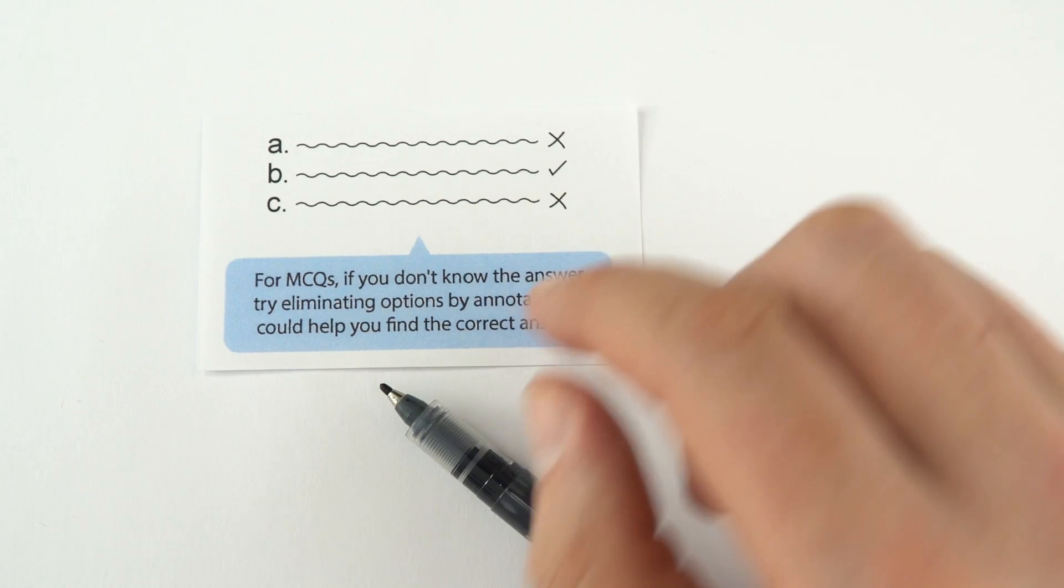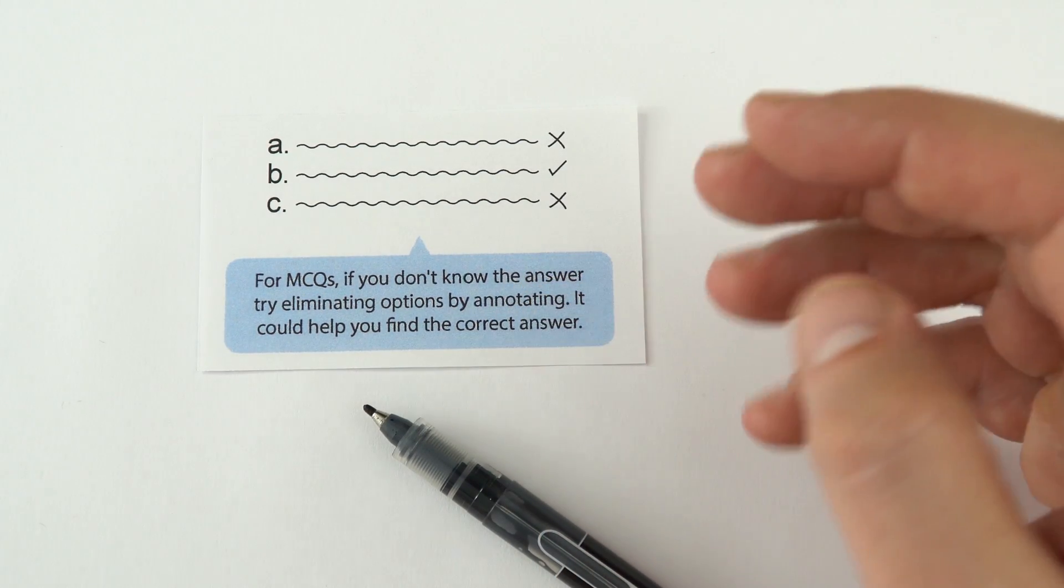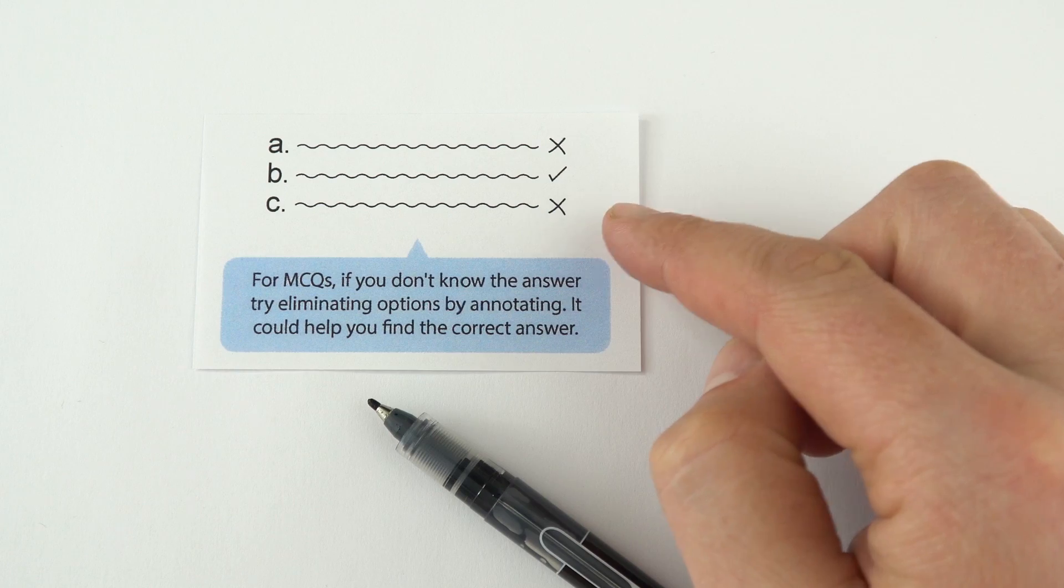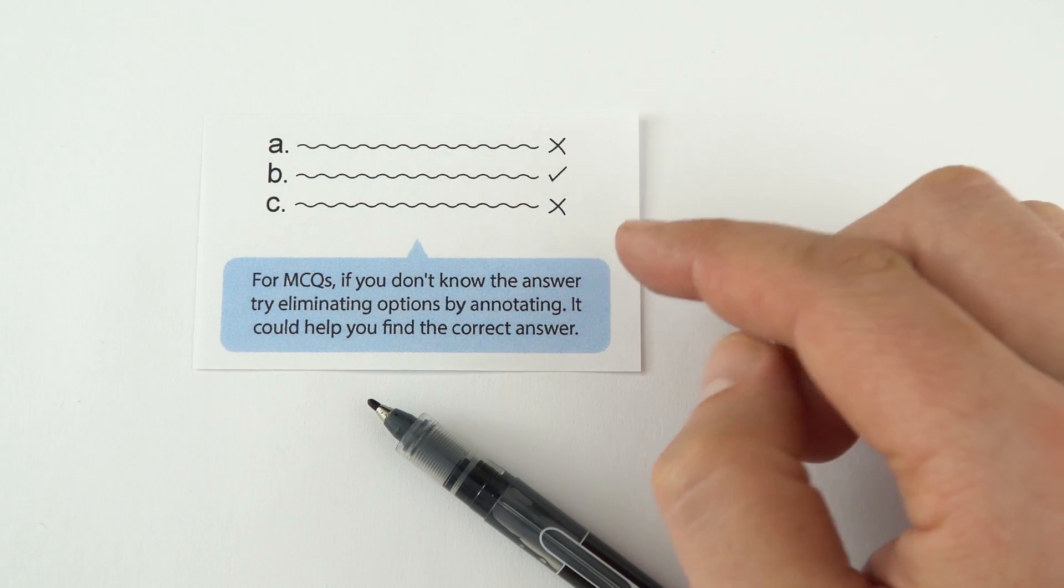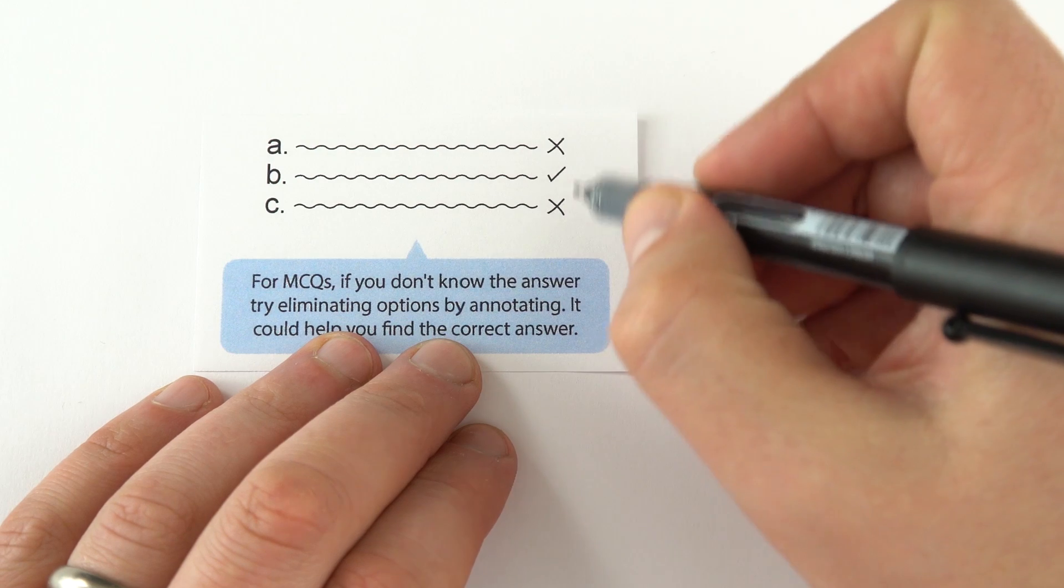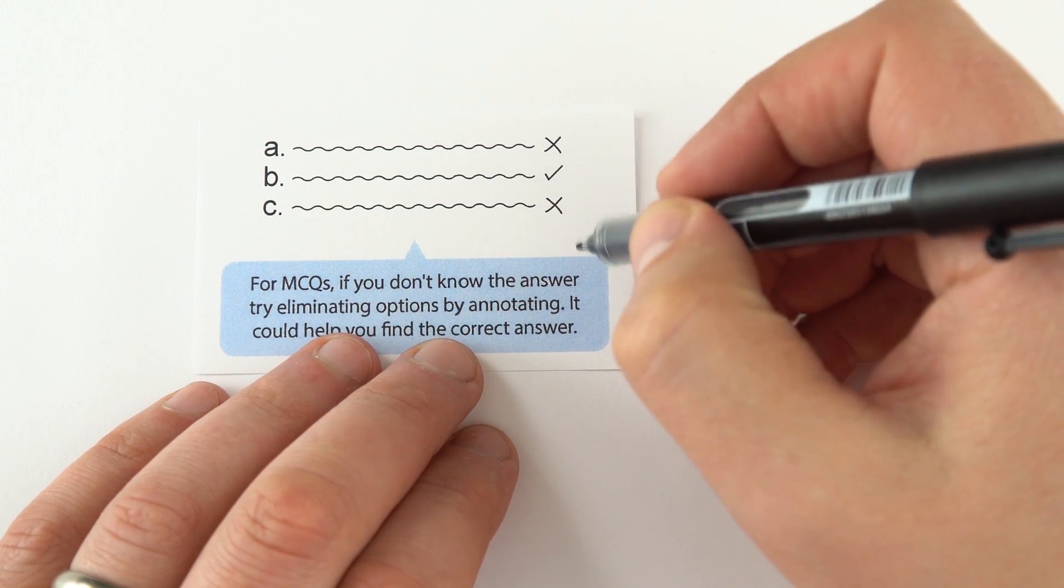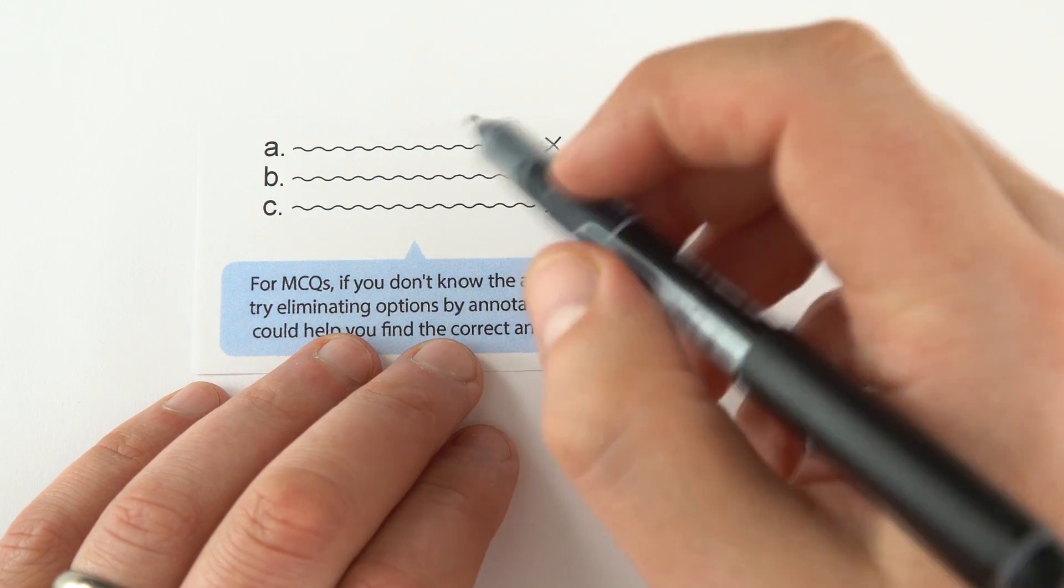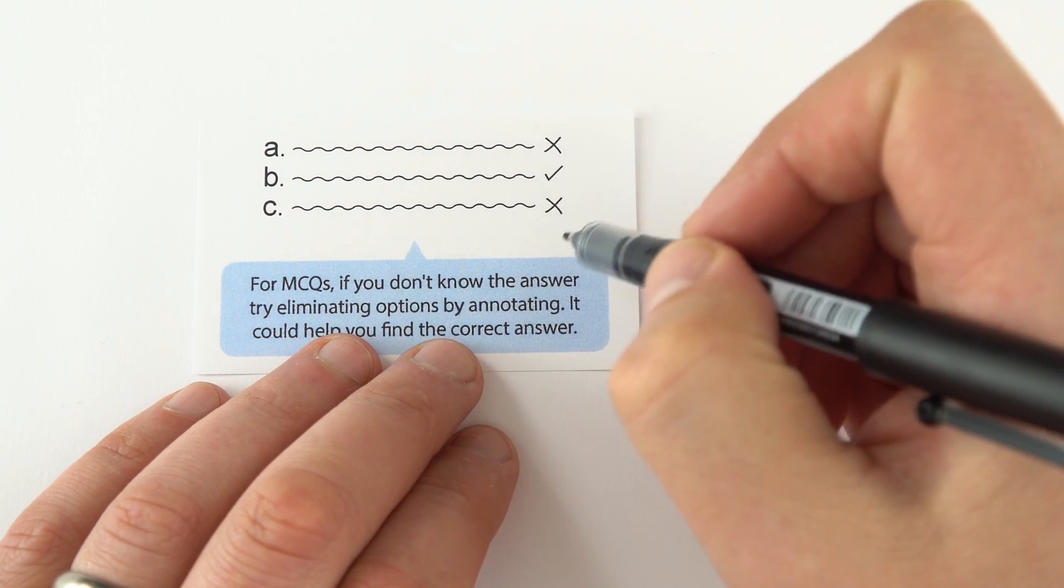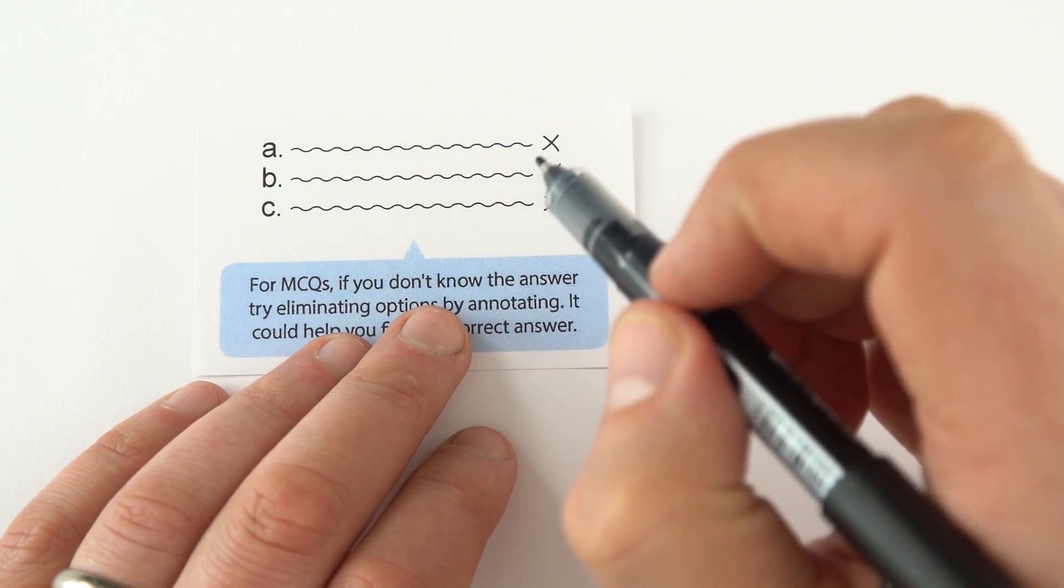When it comes to multiple choice questions, what it's worth doing is rather than just looking at four choices and thinking about which is the correct one, as you go through the answers and you know that they're incorrect, maybe put a cross to the side. So then if you don't know the answer, it's not a one in four choice, it might be one in three or one in two. You should find that there's some definite wrong answers, and that means it's more likely you're going to get the right answer for that multiple choice question.